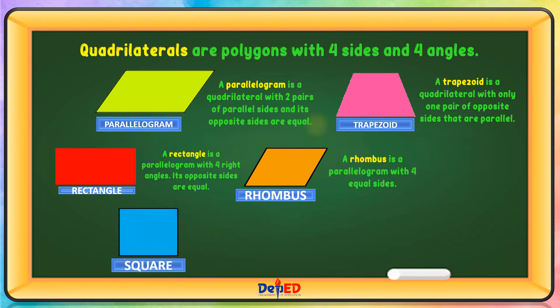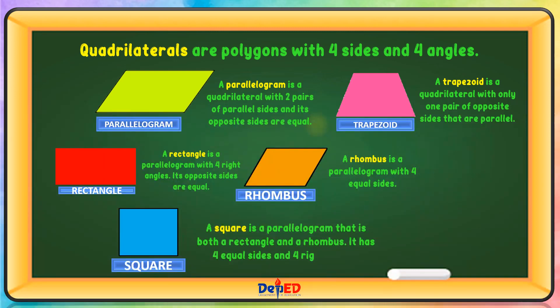A square is a parallelogram that is both a rectangle and a rhombus. It has four equal sides and four right angles.